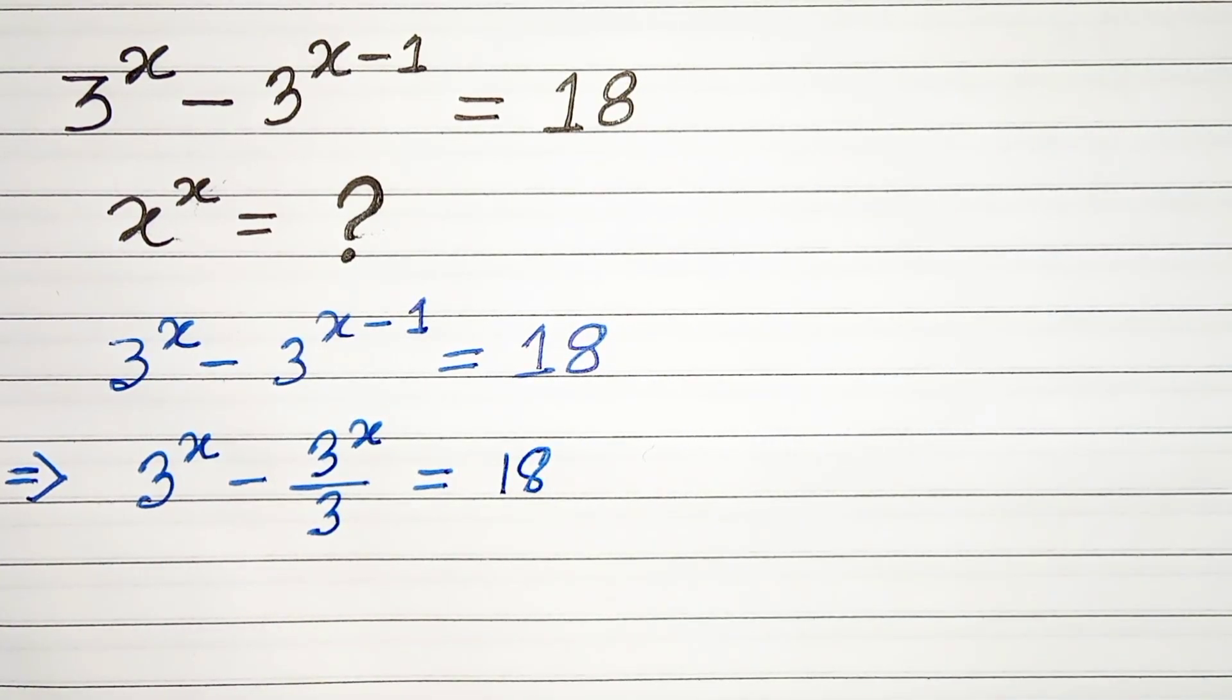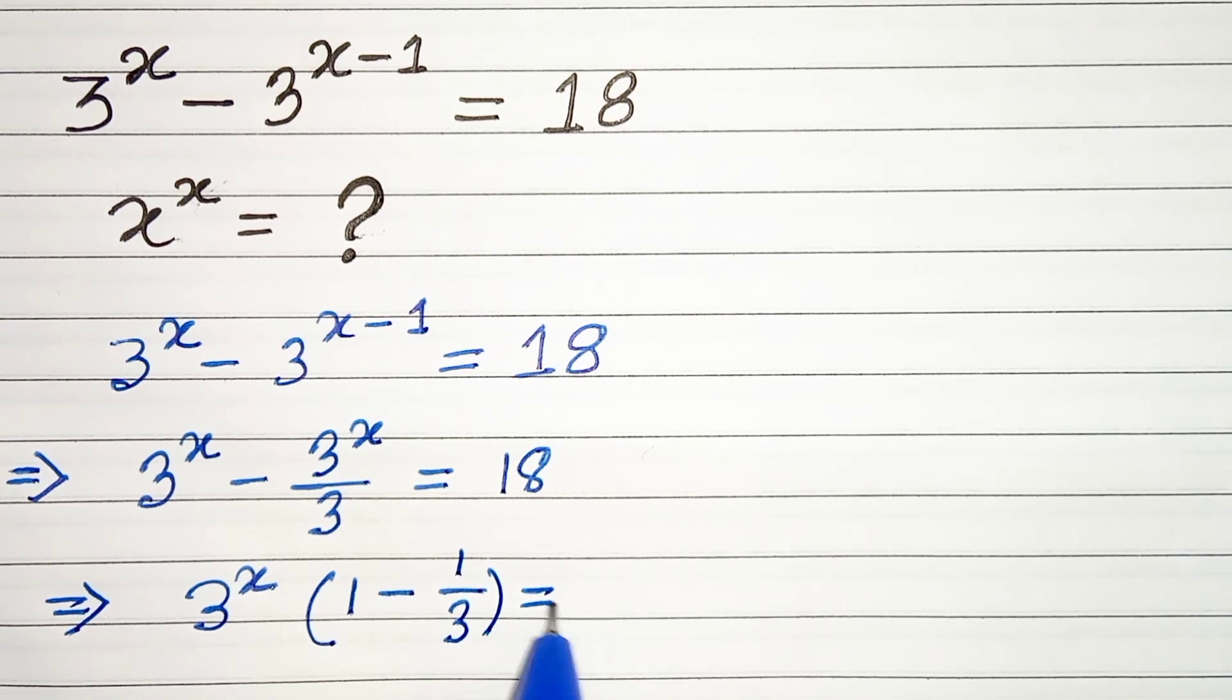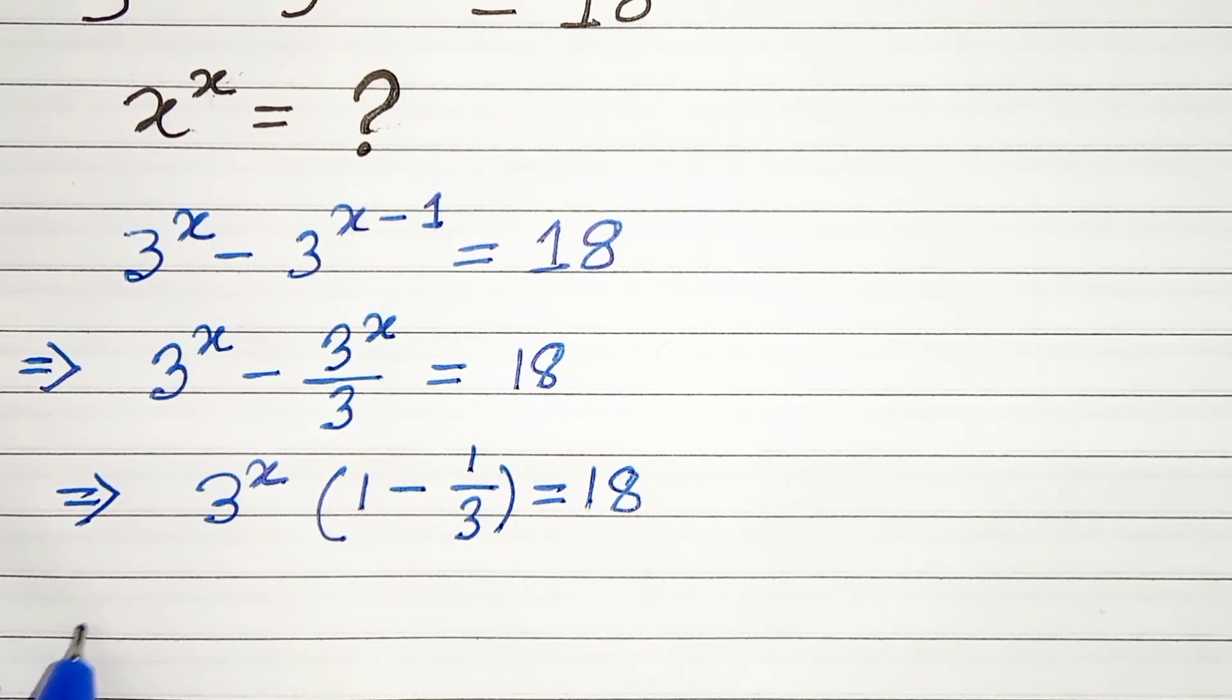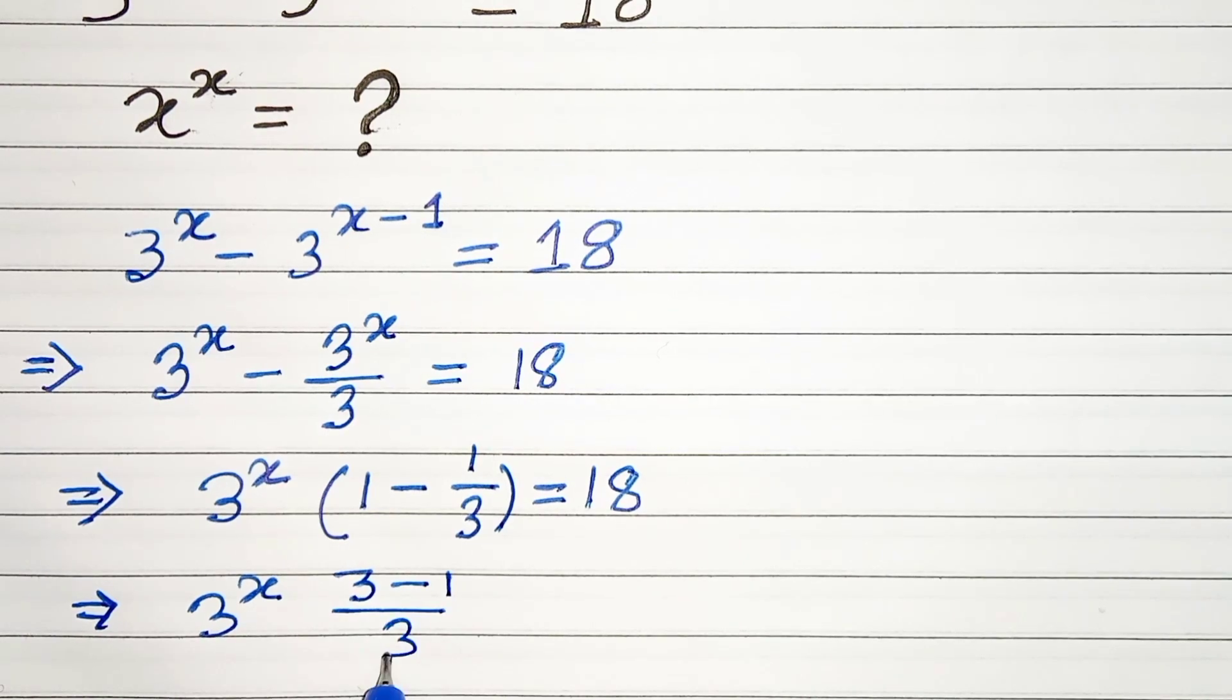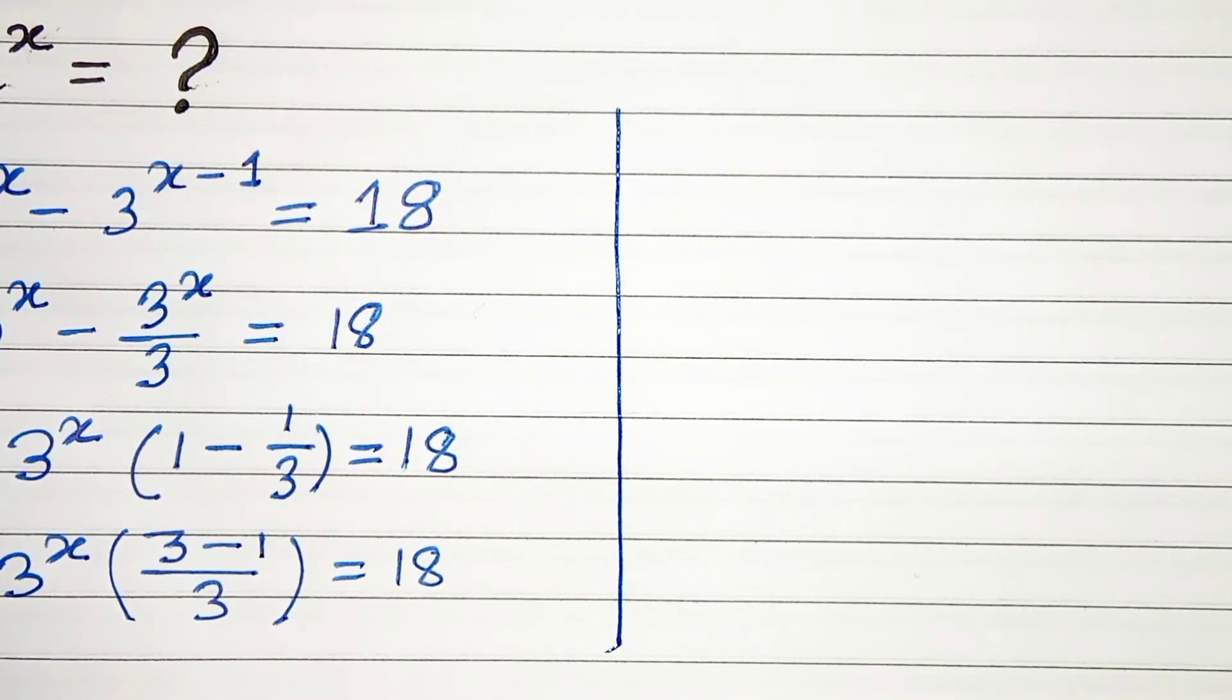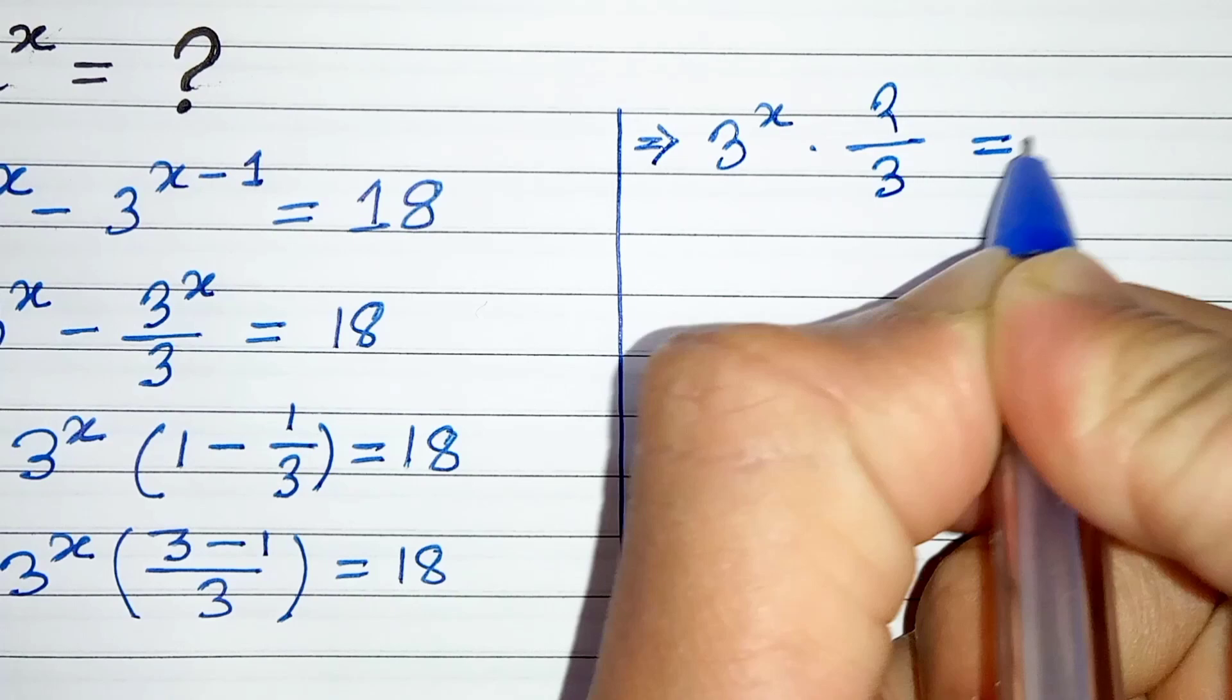Now we can take common 3 to the power x, and we will be left with 1 minus 1 by 3 equals 18. If we take LCM we will get 3 minus 1, which gives us 3 to the power x times 2 by 3 equals 18.